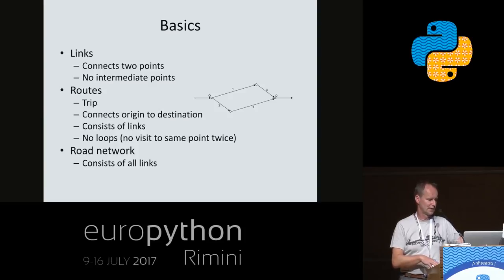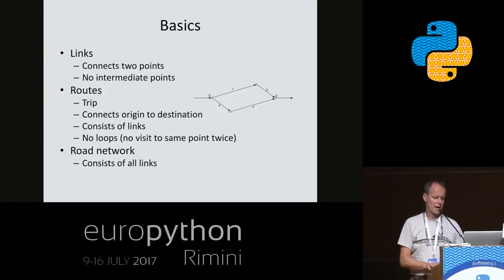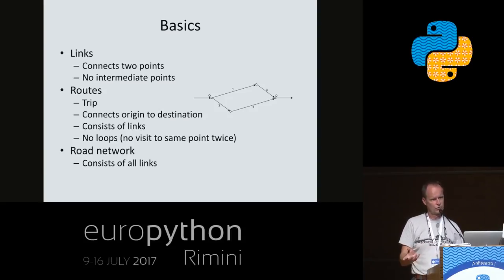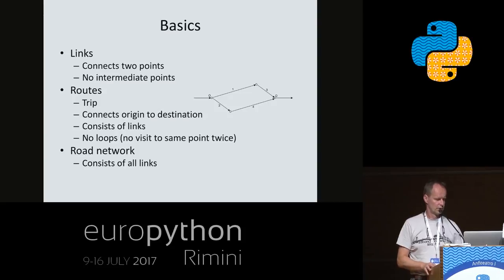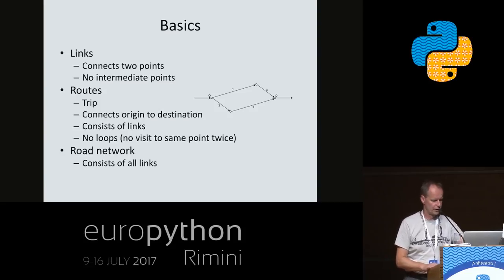We have this idea of a transportation network and the smallest part of the transportation network we call a link. A link is the connection between two points and the traffic that flows into a link has to flow out of the link — it can't disappear in between two nodes. That's the definition of a link. Routes are then a combination of links which travelers use to navigate through the network.